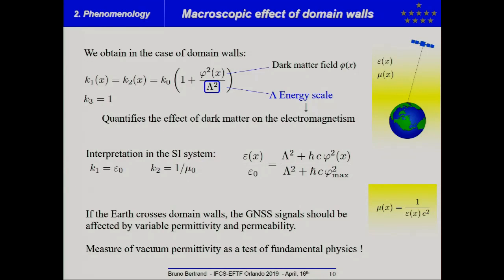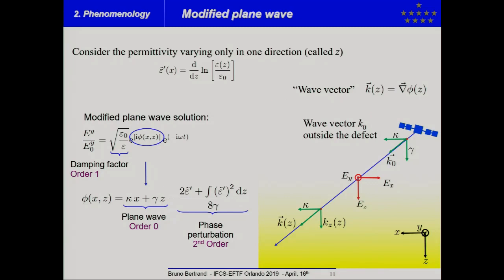The conclusion is that, first, if the Earth crosses domain walls, the GNSS signal should be affected by a variable permittivity and a variable permeability. And, as you know, perhaps, in the new SI system, the fact of the permittivity at the classical level should be a measurable quantity is quite controversial. And here, we give a nice interpretation on this measure, since the measure of vacuum permittivity could be a test of fundamental physics.